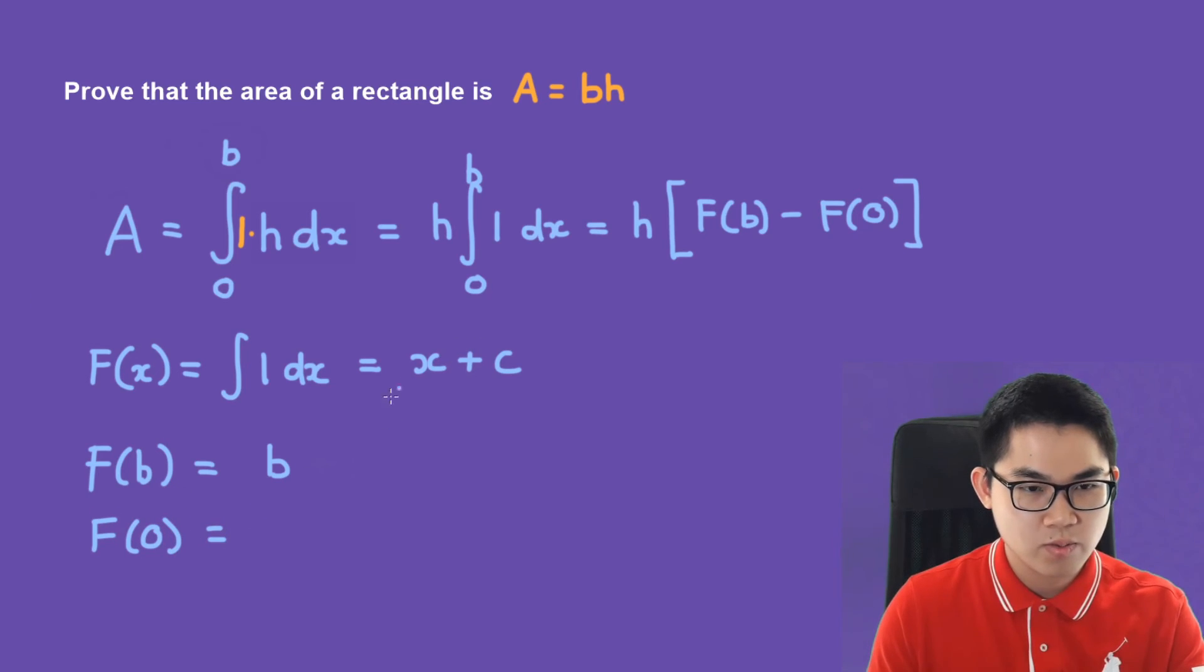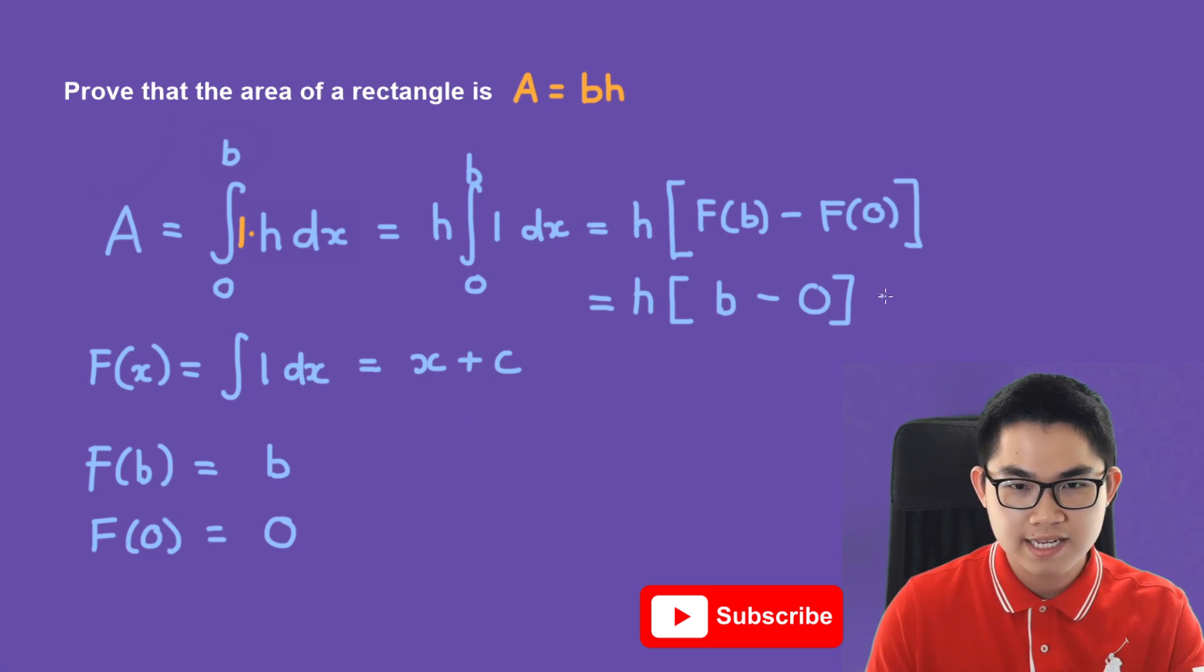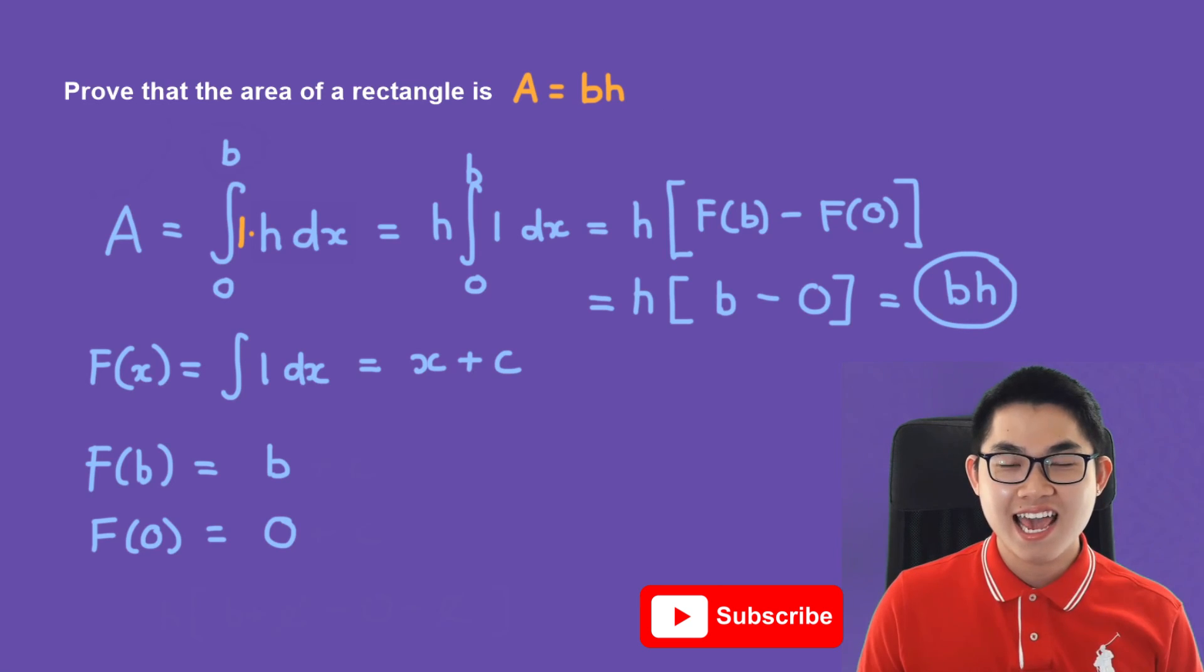F(0) will be just 0. Continuing on, we have h times [b minus 0], which gives us b times h, or the base times the height. We've proven that the area is equal to the base times the height, and that's it for today.